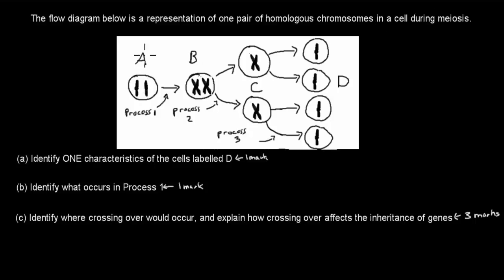We have A, which is this part here. Then there's process 1, which leads to B. Then process 2, which leads to C. And then process 3, which leads to D.